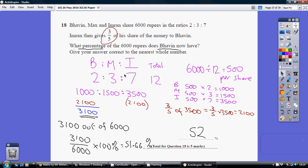There's 12 shares in total, so how many rupees per share? 6000 divided by 12, which is 500 for every share. Bovine, who's got two shares, is going to get two lots of 500, which is 1000.